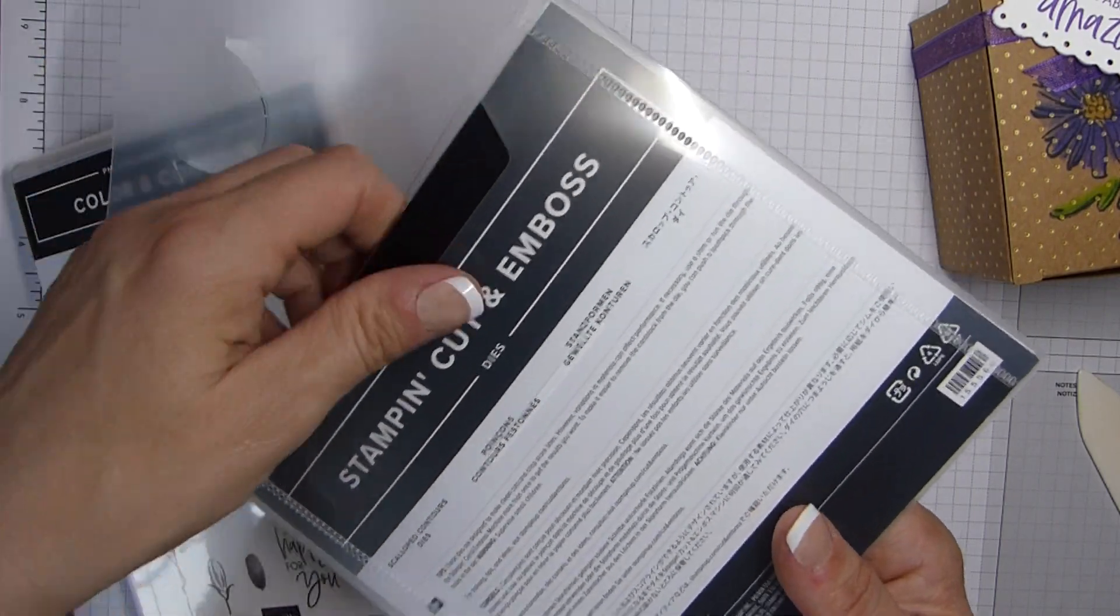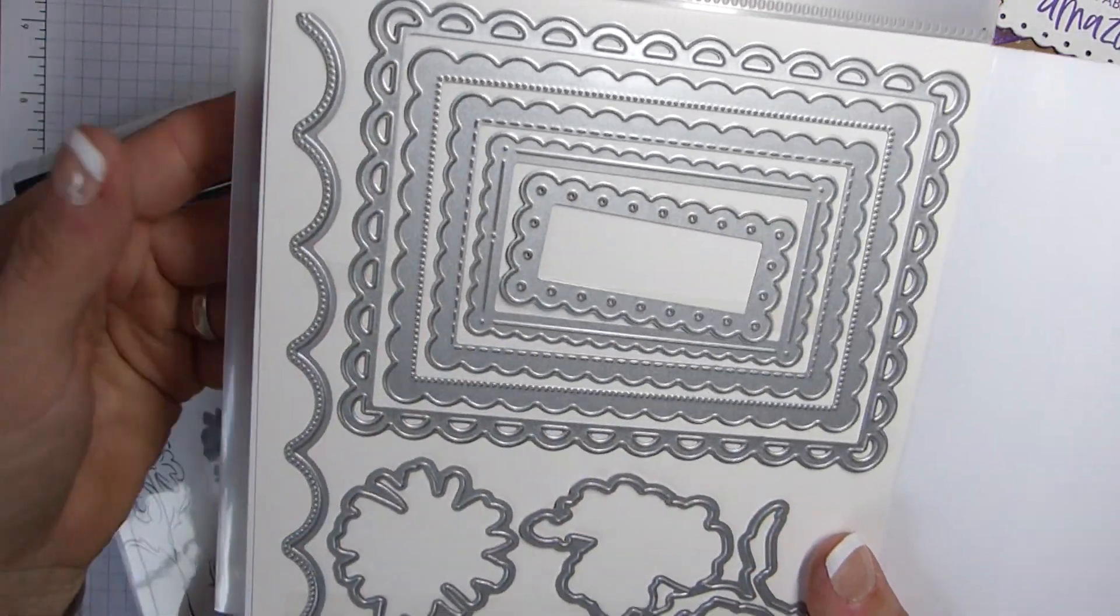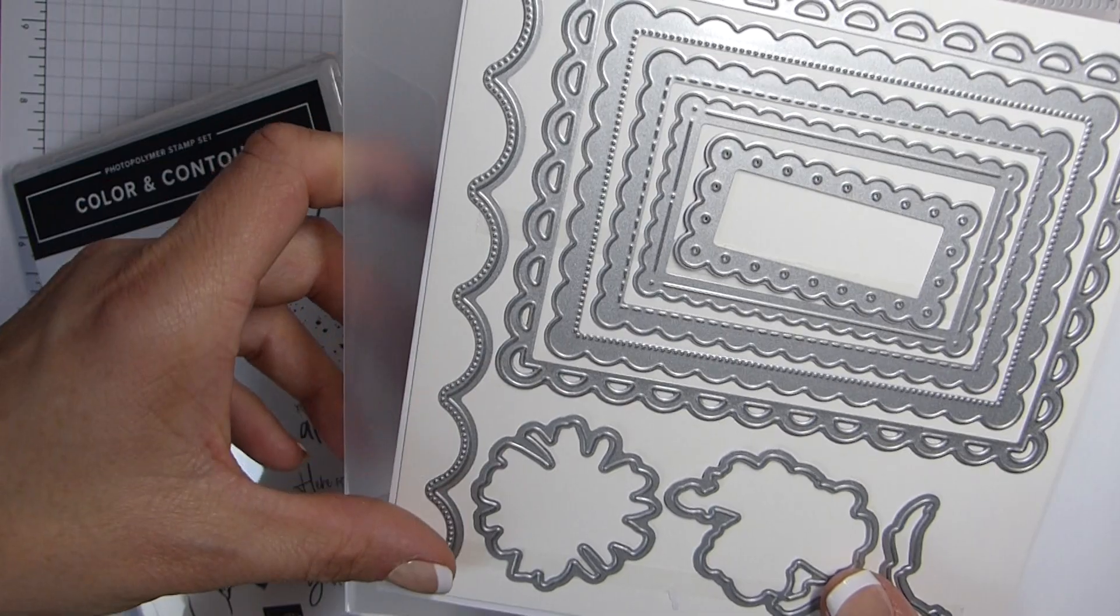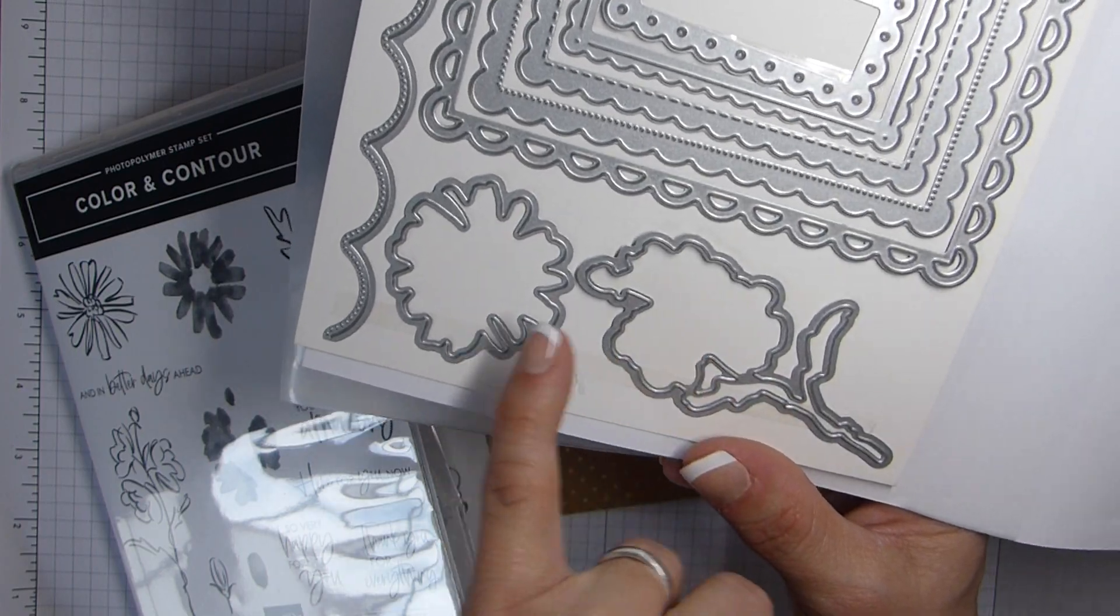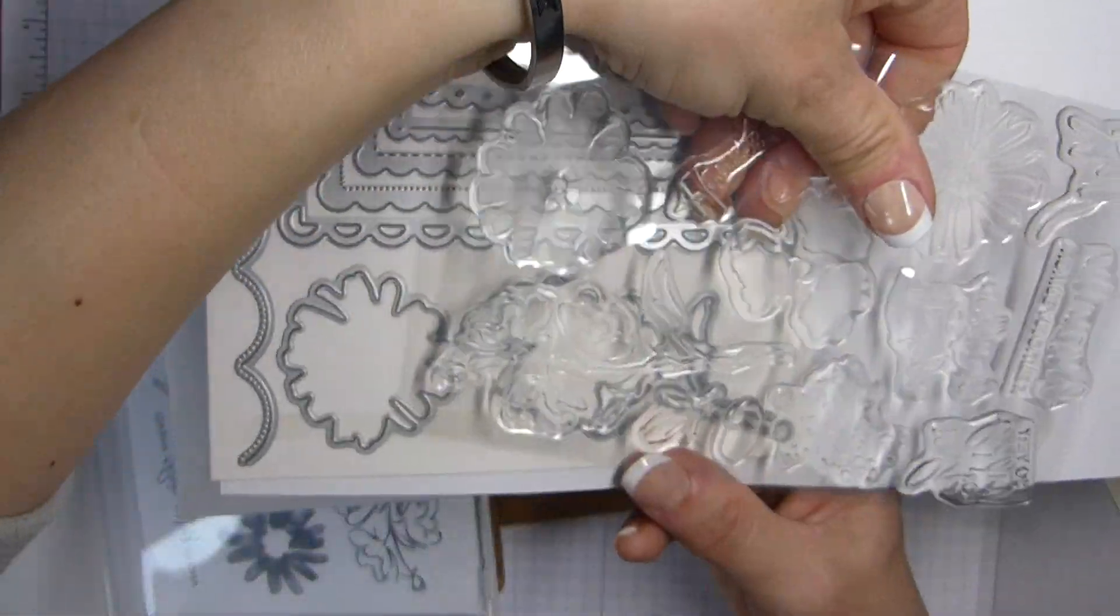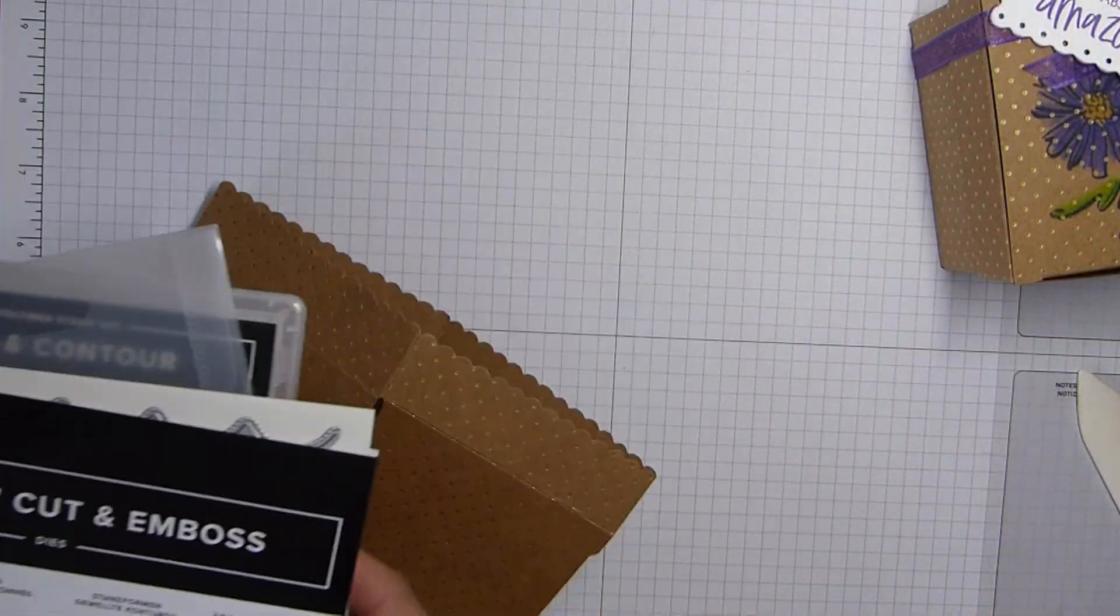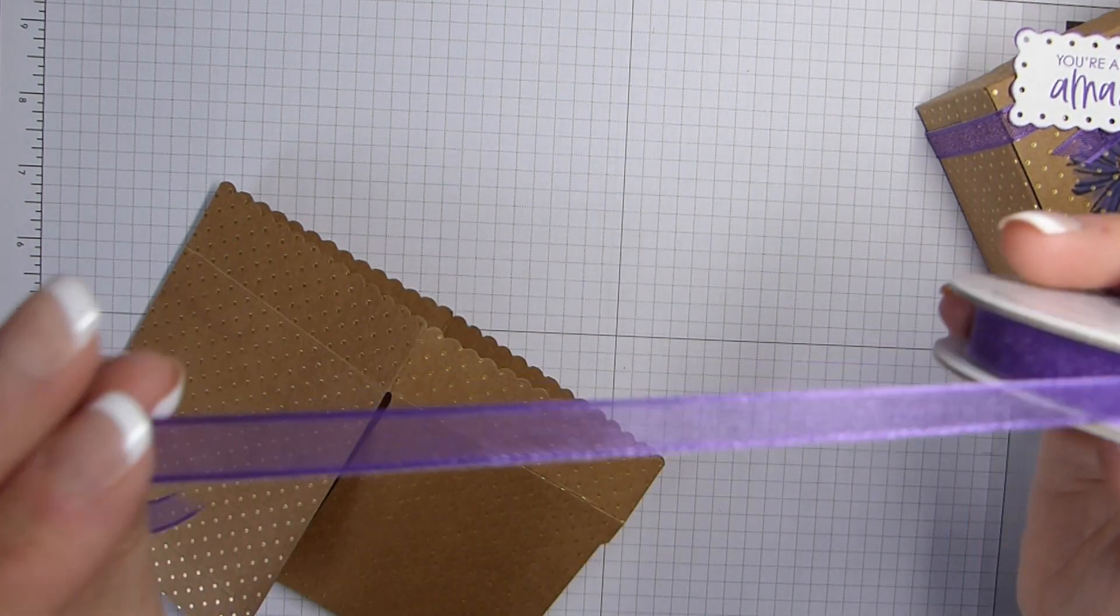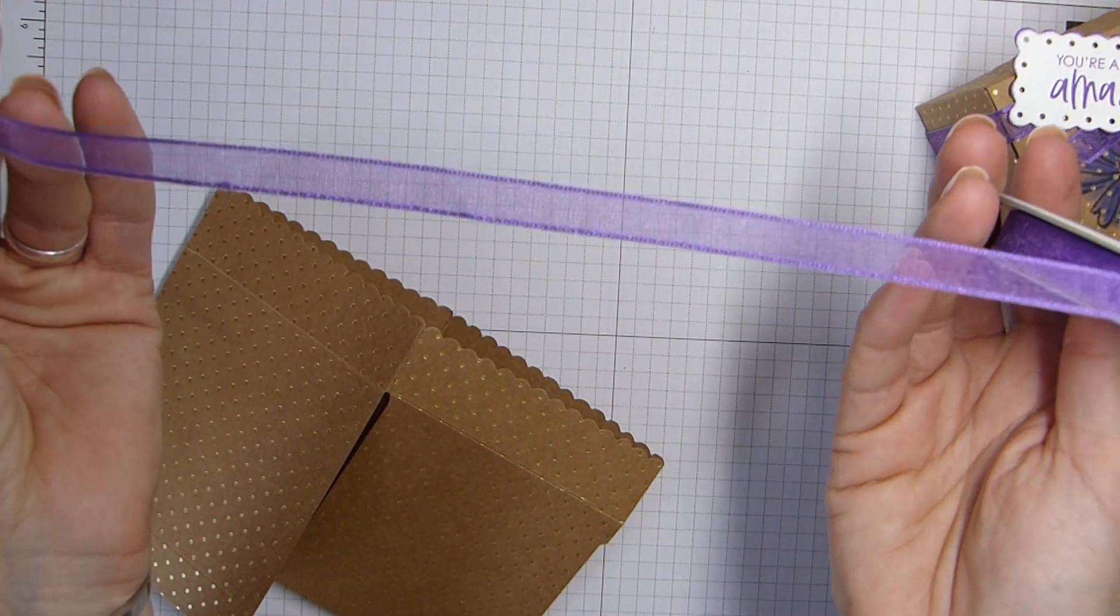And then the scalloped contours dies that go with it are fab. We've got some brilliantly decorated rectangles here. We've got this beautiful scalloped edging here. And then we've got the flower and the stemmed flower that you can die cut. I think these are gorgeous. And then finally, as you may well have also spotted some really beautiful gorgeous grape sheer ribbon, which is really nice. Gorgeous grape is a colour that I don't use much of, but wow, I love this ribbon.